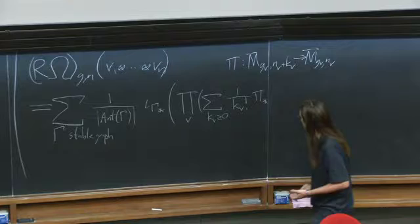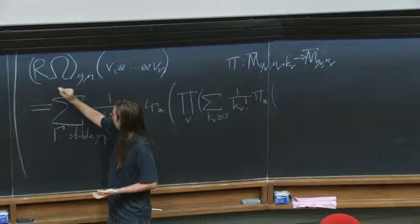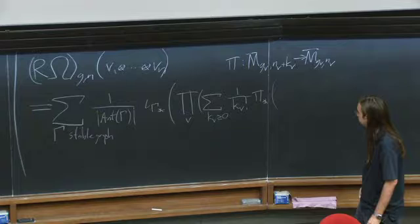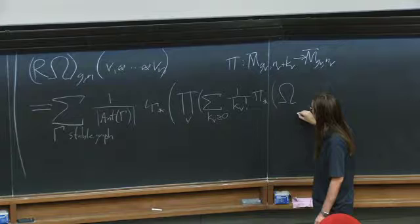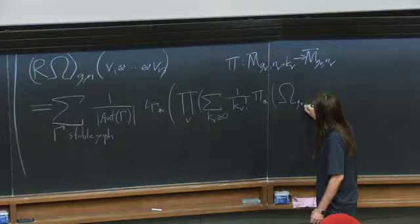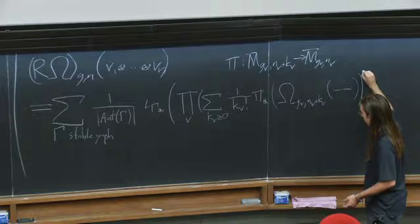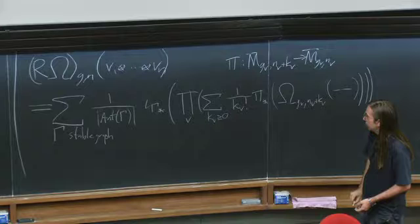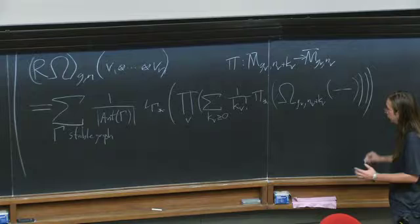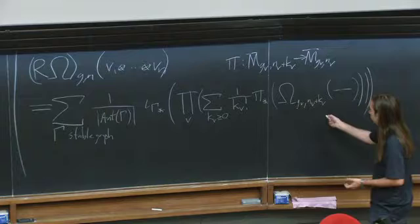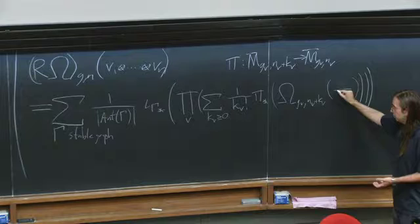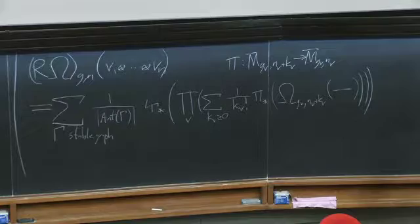You then piece those all together using the data of the stable graph gamma. What I put inside here should at some point make use of both pieces of data: the cohomological field theory and the R-matrix. Here I'll put omega_{g_v, n_v + k_v}, and I need to tell you some vectors to feed to it. This is the shape of the formula for Givental's R-matrix action: a sum over graphs where at each vertex you essentially put the cohomological field theory you start with. R doesn't appear explicitly here, and I also haven't yet told you what n_v + k_v vectors you feed to omega.